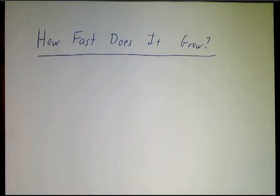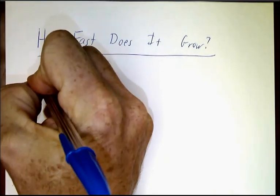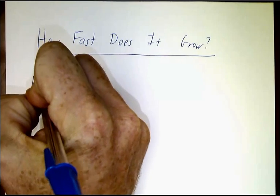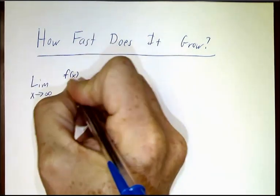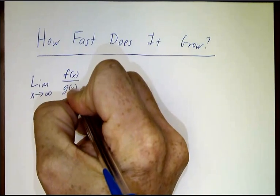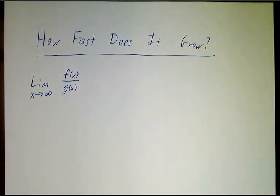Okay, we've seen that in many cases, computing a limit at infinity involves a race. You've got one function that's growing and another function that's growing, and you wonder which one grows the fastest.